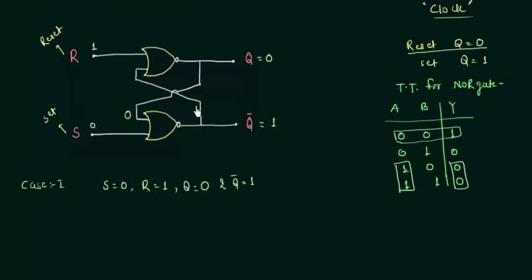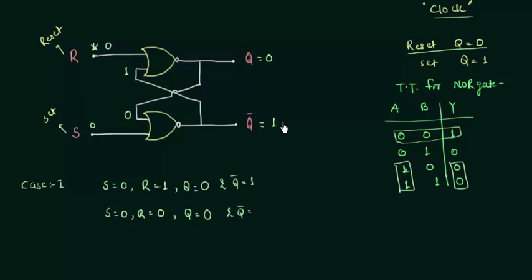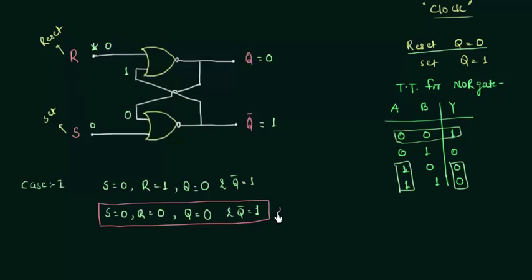Now if I remove the input by making S=0 and R=0, will the data remain stored? Q complement is still 1, connected to the second NOR gate input, giving 0 and 1 — output Q remains 0. And 0,0 into the first gate gives Q complement=1. The output is unchanged at Q=0, Q complement=1 — the same as before. So when S=0 and R=0, we have the memory state: the previous values are stored.